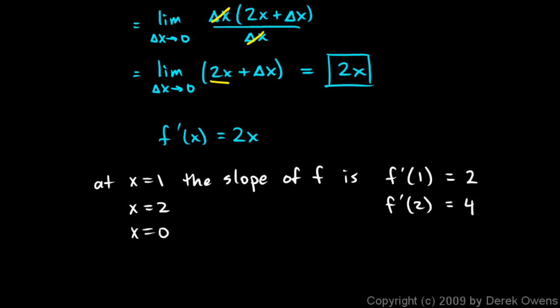At x equals 0, the slope would be f prime of 0, which is clearly 0. At x equals negative 1, the slope would be f prime of negative 1, which is negative 2.